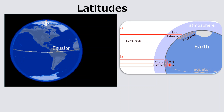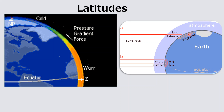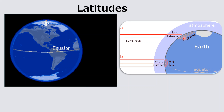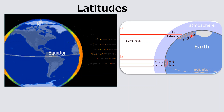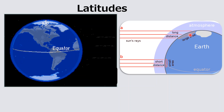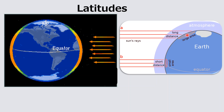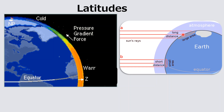On the other hand, away from the tropics, due to the curvature of the earth, the rays strike at lower angles. The oblique or slanting rays of the sun pass through a larger area of the atmosphere and are spread over a larger area. Much heat is absorbed by clouds, dust particles, and water vapour, so oblique rays have less heating power.